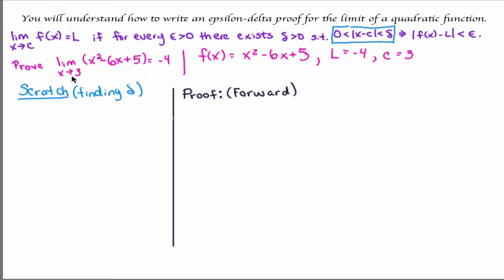In this example, I want to prove that the limit of x squared minus 6x plus 5, as x approaches 3, equals negative 4. Before we begin our proof, we need to figure out what the function is, what c is, and what l is. That's what I've done here. The function, according to our definition, is x squared minus 6x plus 5. c is 3, and l is negative 4.